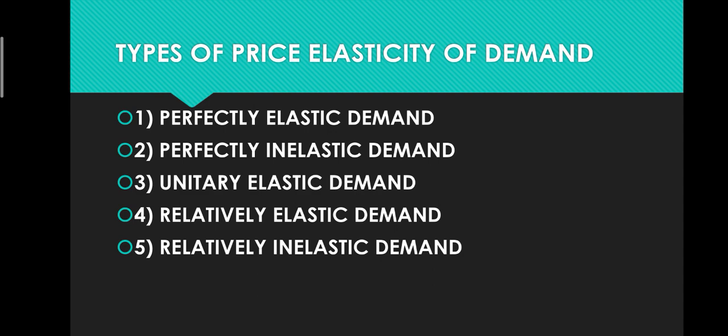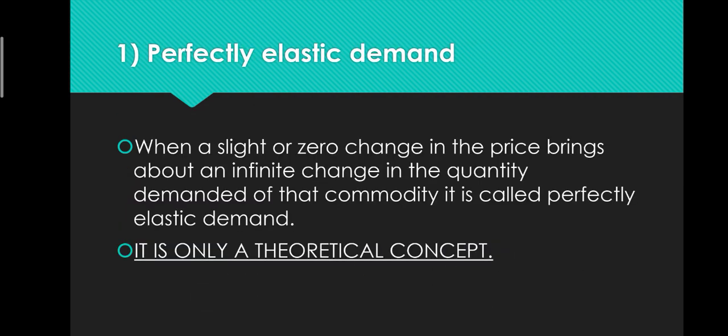Now, types of price elasticity of demand. As you can see in the slide, there are five types: first is perfectly elastic demand, second is perfectly inelastic demand, third is unitary elastic demand, fourth is relatively elastic demand, and fifth is relatively inelastic demand. Let's go into the details of each.